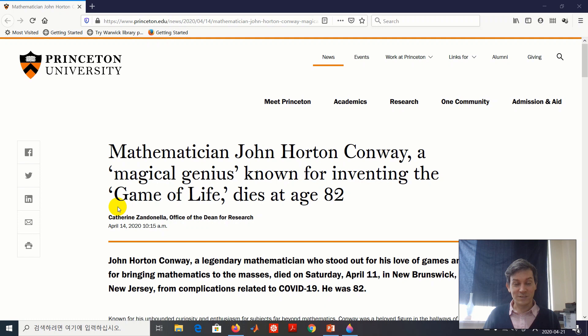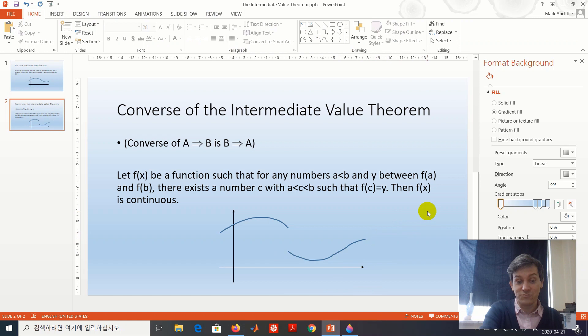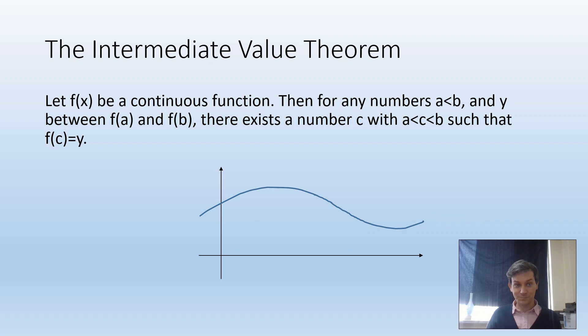The thing I'm actually going to talk about is related to a theorem known as the Intermediate Value Theorem, which is a result from real analysis. So first I'll explain what that theorem is. This is what the Intermediate Value Theorem says: let f(x) be a continuous function. Then for any numbers a < b and y between f(a) and f(b), there exists a number c with a < c < b such that f(c) = y.